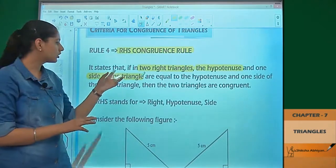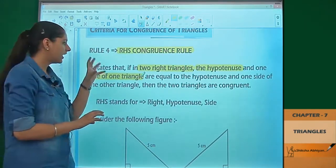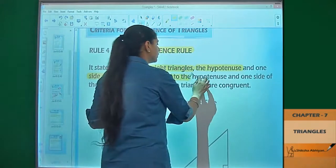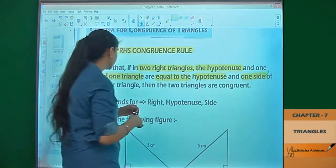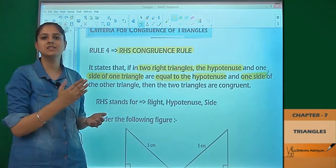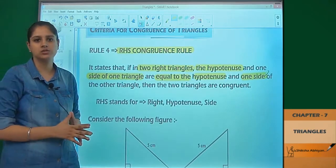Next, one hypotenuse and any one side of one triangle must be equal to the hypotenuse and one side of the other triangle. So these two triangles can be congruent by this criteria.